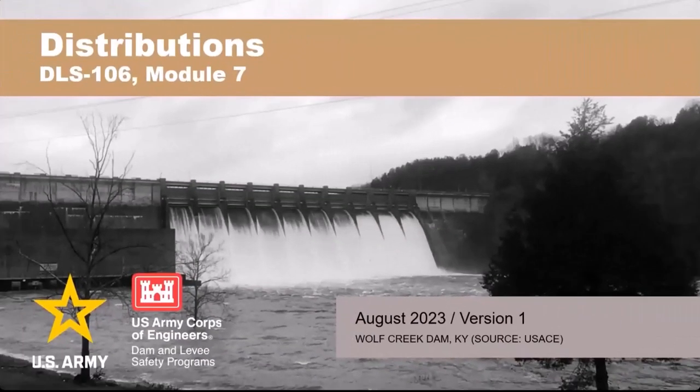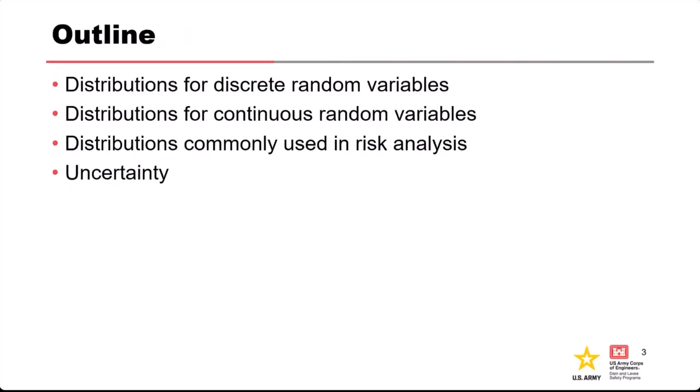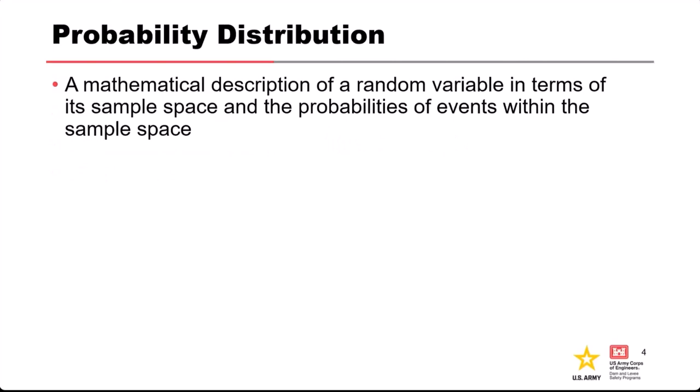This presentation is about probability distributions. We're going to talk about ways we can define probability distributions that describe our random variables and how we use them in a risk analysis. We'll cover discrete random variables, continuous random variables, some of the ones we commonly use in risk analysis, and we'll revisit uncertainty a little bit.